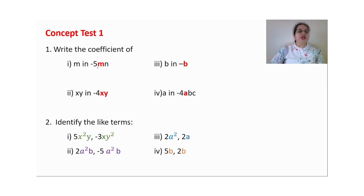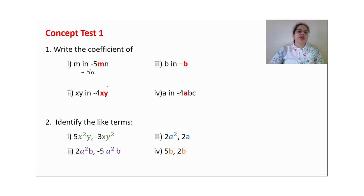Write the coefficient of m in minus 5mn. The coefficient of m is minus 5n. So the coefficient of m is minus 5n. Remember to write this as a complete sentence.